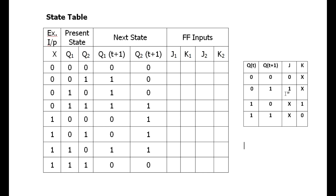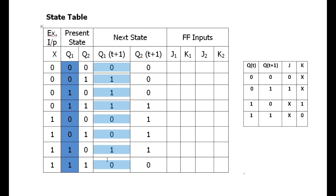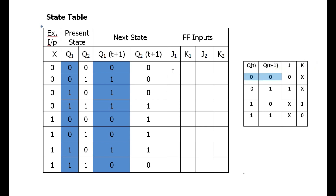We need the excitation table of the JK flip-flop. To find J1K1, we take Q1 (present state) and Q1(t+1) (next state). For 0→0: J1K1 = 0x. For 0→1: J1K1 = 1x. For 1→1: J1K1 = x0. Filling each row accordingly: row 1 is 0x, row 2 is 1x, row 3 is x0, row 4 is x0, completing J1K1 for all eight rows.